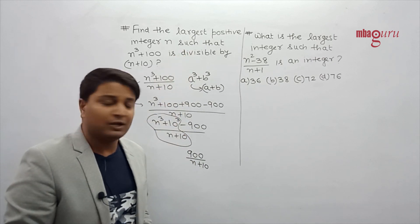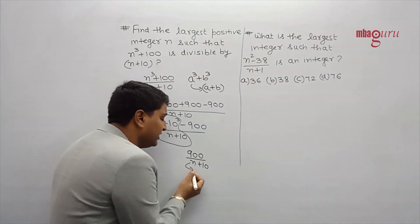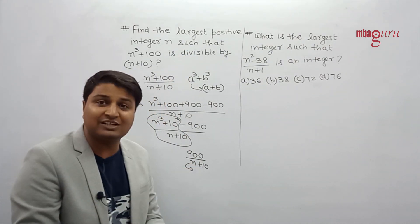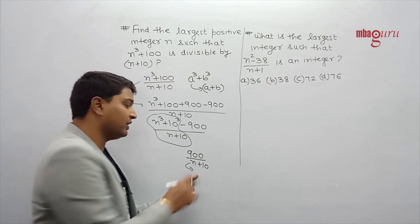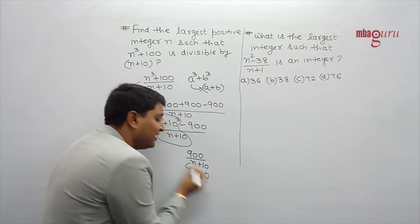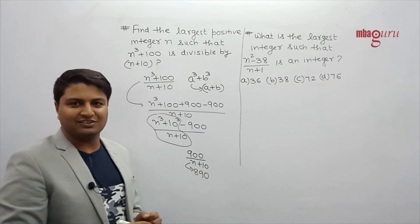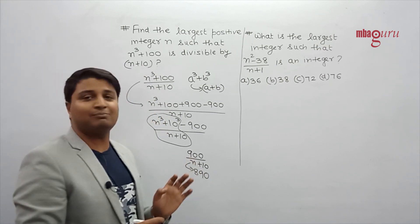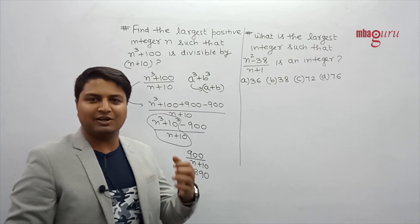Okay. So now let me tell you what n will be the greatest value so that the integer will come. If you say that n plus 10 should be 900, then n will be 890. This is the answer to the question. Because if we give greater than 890, then it will not be an integer.